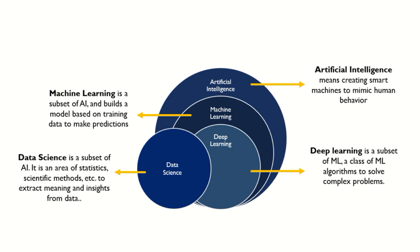Deep learning is a subset of machine learning — a class of machine learning algorithms to solve some complex problems that you are unable to solve with a simple set of equations, probably requiring complex mathematical models. Data science is a subset of artificial intelligence itself — an area of statistics and scientific methods to extract meaningful insights from the data. Keeping this in mind, it is so important to understand real-time signals and systems because these emerging fields all came from signals and systems only — in short, about real-time data.